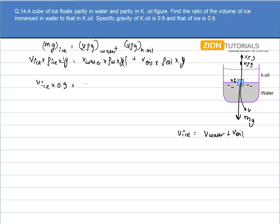V_water plus V_oil times 0.9. And we know this relation, so I can substitute the value of V_ice from here. I get 0.9 V_water plus 0.9 V_oil.